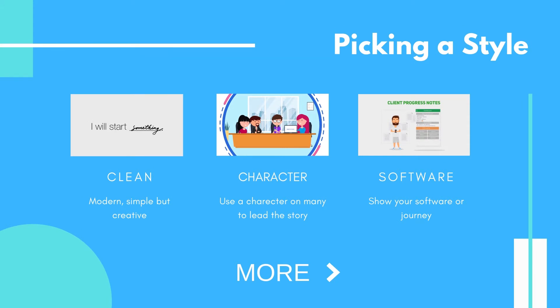Now let's talk about picking a style. There are lots of different styles to choose from in animation. We've got clean animations — very nice, clean, single line animations. They're beautiful, modern, and simple, but very creative. Then there's character animation — use a character or many characters to lead the story. And software animation — we can show your software inside the journey itself, though be careful with that one in case your software interface ever changes, as it can affect the longevity of your video.